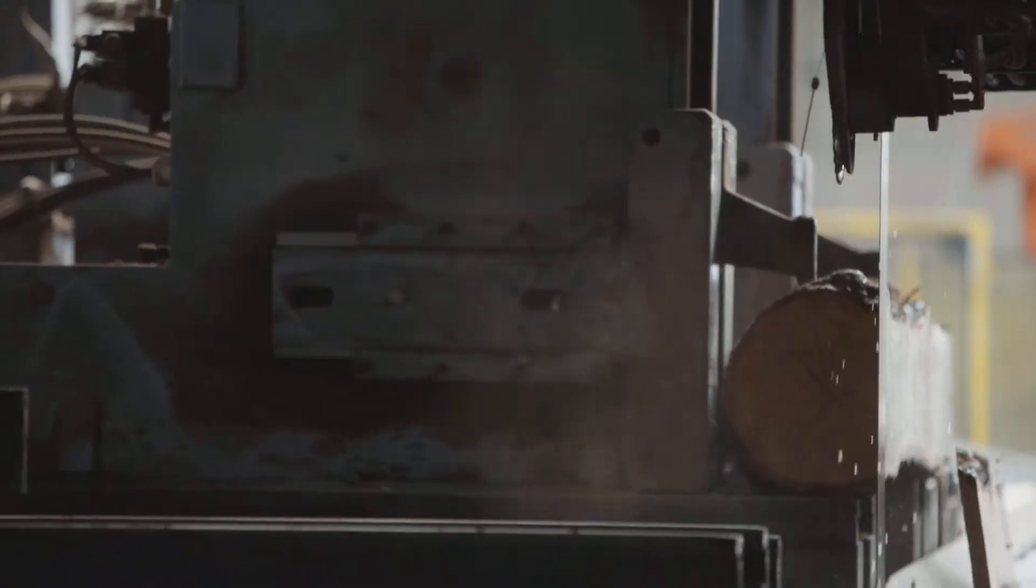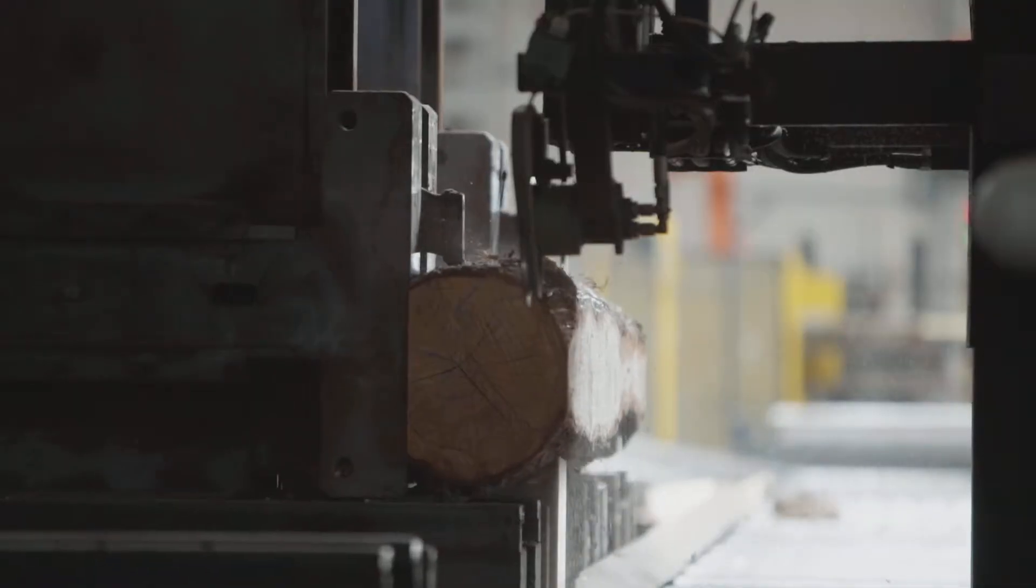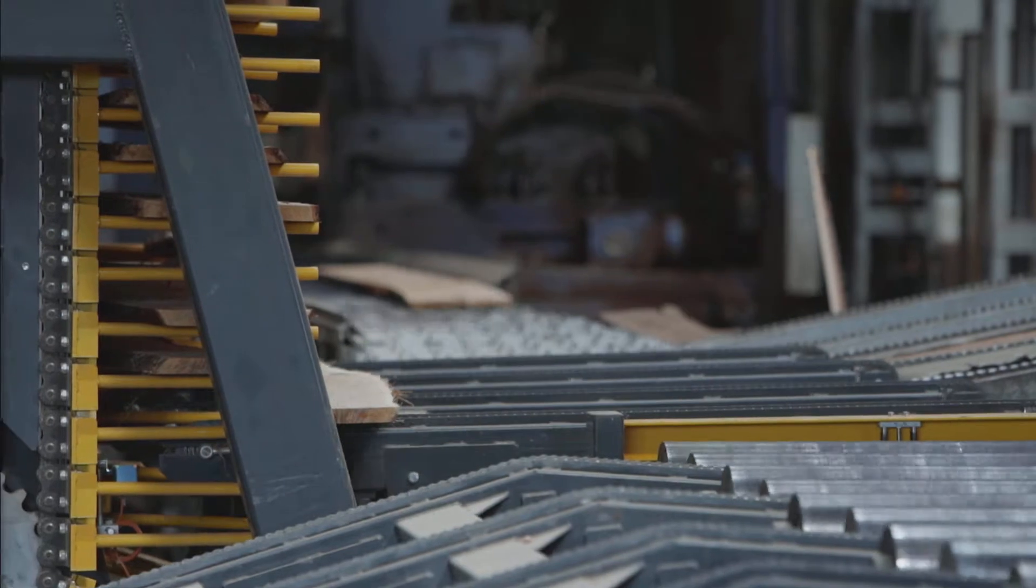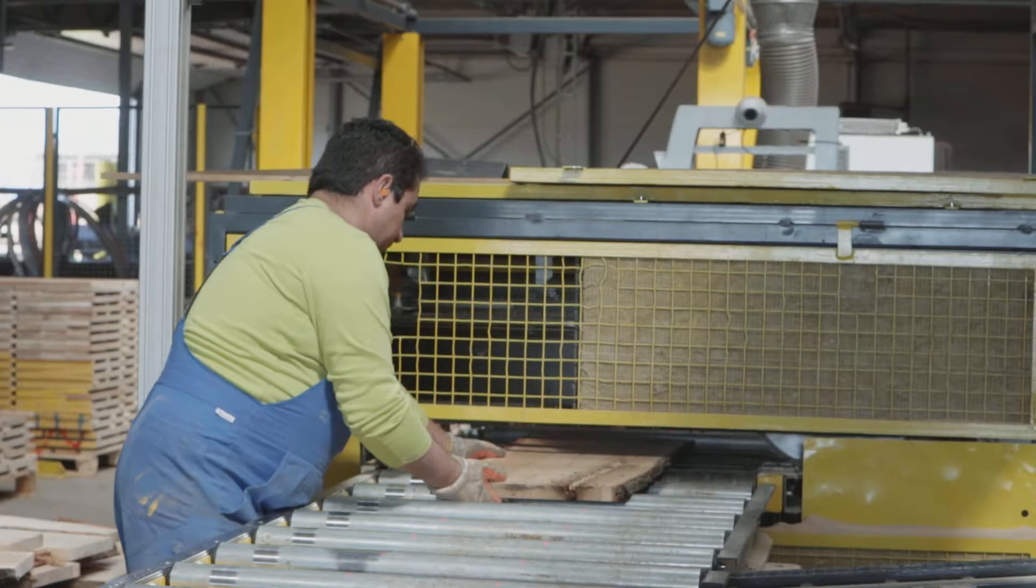To fully understand the advantages of this new approach to wood processing, look closely at how a typical hardwood sawmill works. After the unedged timber is cut by a vertical bandsaw, a conveyor line takes it to the first stand to be evaluated.